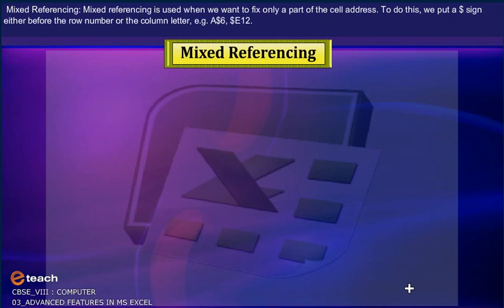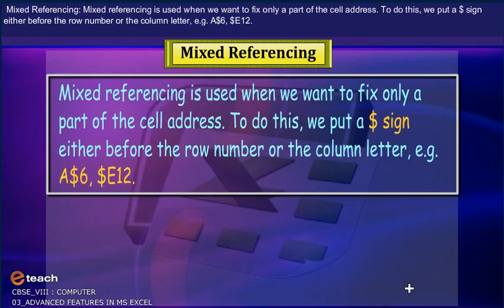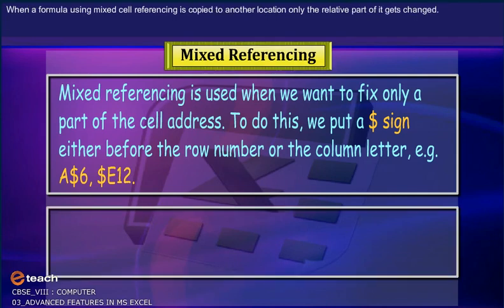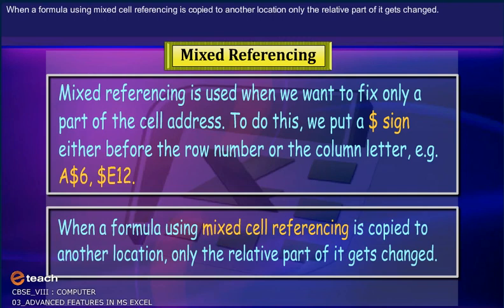Mixed referencing is used when we want to fix only a part of the cell address. To do this, we put a $ sign either before the row number or the column letter. For example, $E6 or E$12. When a formula using mixed cell referencing is copied to another location, only the relative part of it gets changed.